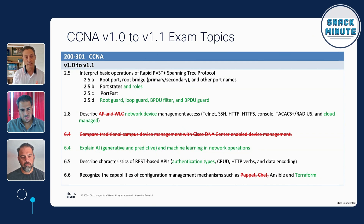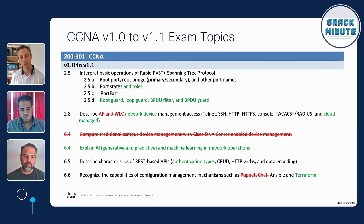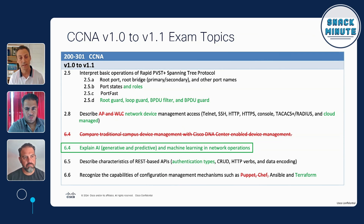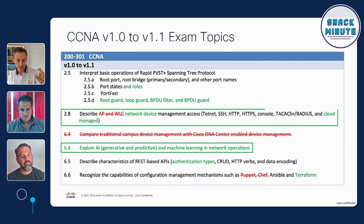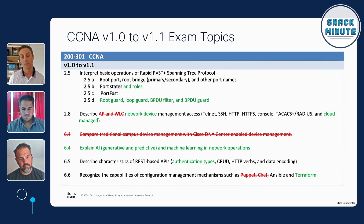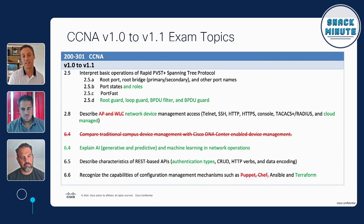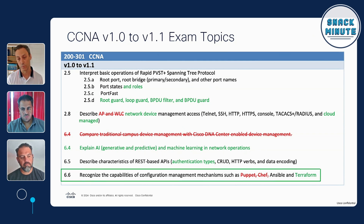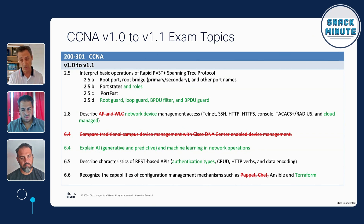People were worried and concerned, but hopefully when they've looked at this they've realized it's not that bad. If you're in the middle of studying for 1.0 and decide to wait for 1.1, which comes out August 20th, it's not that big of a stretch. There's a little bit of extra spanning tree content added to 1.1. The 6.4 item is the AI and machine learning item, which is very popular. Items 2.8 and 6.4 go hand in hand — we removed the specific callout for DNA Center and opened it up to management solutions like SD-WAN, SDA, and Meraki. Then we took out Puppet and Chef and added Terraform.